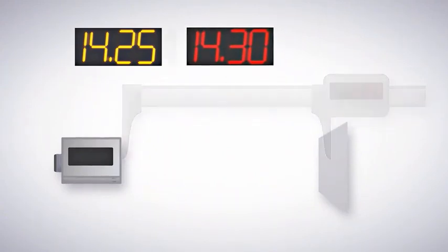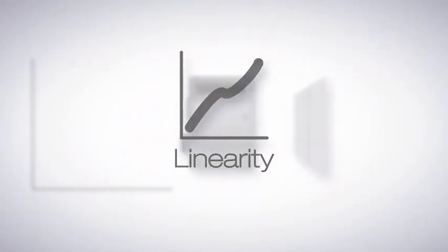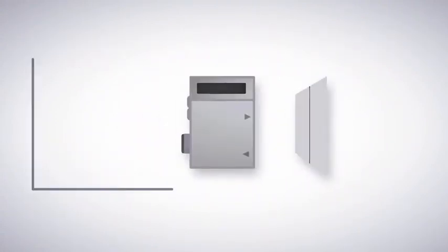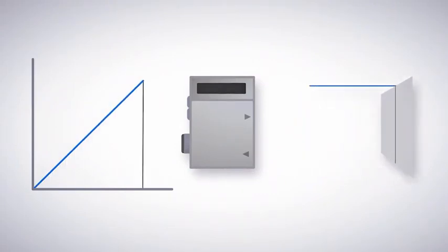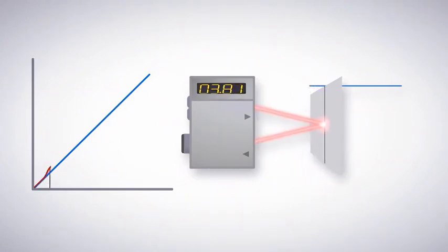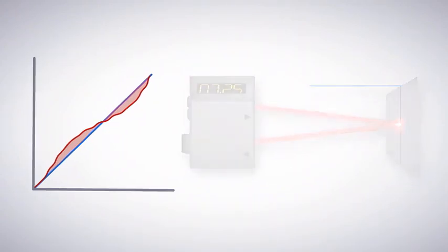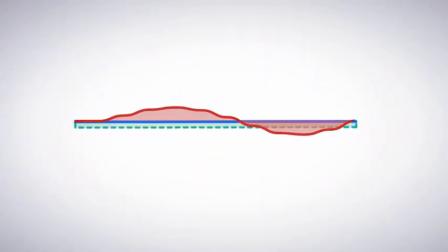In these cases, another specification becomes more relevant to real-world performance: linearity. Linearity is the maximum deviation between an ideal straight-line measurement and the actual measurement. It indicates how closely a sensor's analog output can approximate a straight line when measuring across the sensor's range. Linearity is the most valuable specification in known IO-Link applications because the more linear the sensor, the more easily any consistent inaccuracy can be calculated for and removed.